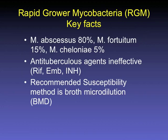Key facts about rapid-grower mycobacteria: the most clinically significant are M. abscessus and its subspecies, and M. fortuitum, which together cause 95% of rapid-grower mycobacteria disease. Anti-TB agents are ineffective — rifampin, ethambutol, and INH don't work. For rapid-grower mycobacteria, the recommended susceptibility method is broth microdilution, similar to how we determine MICs on regular bacteria.